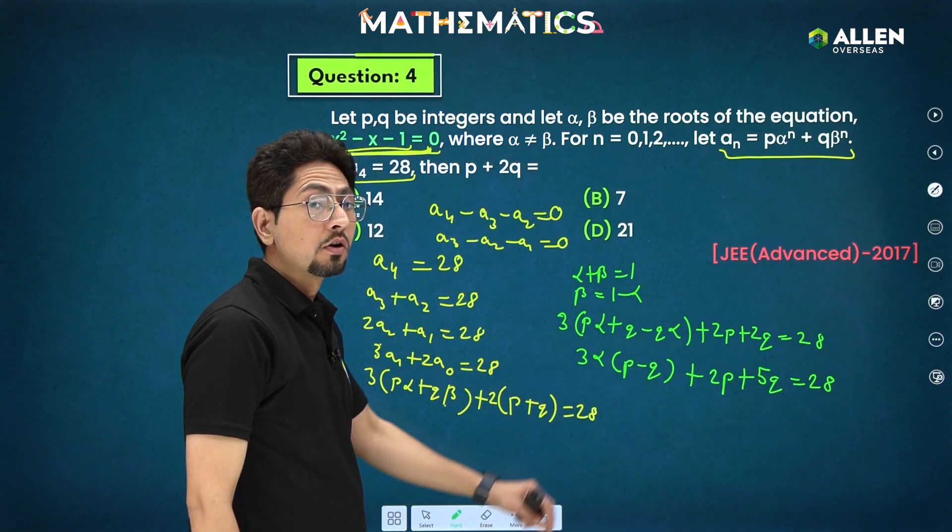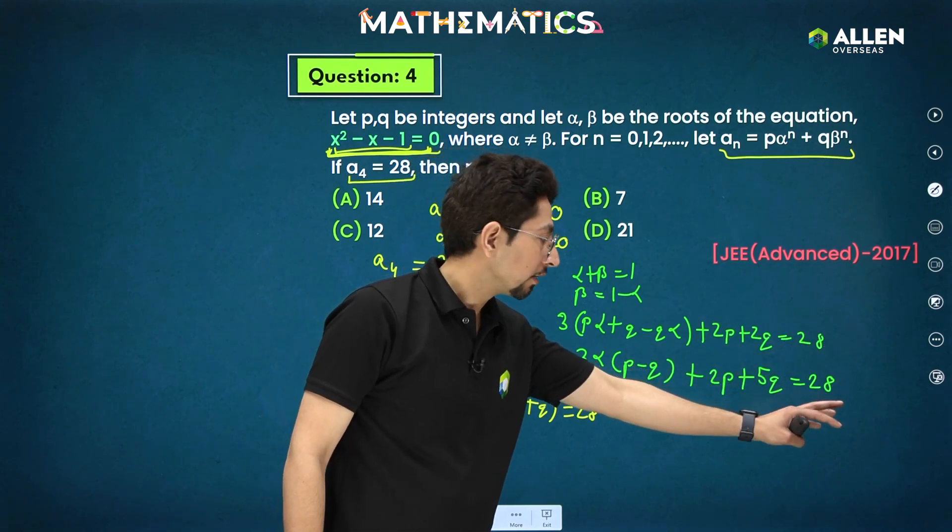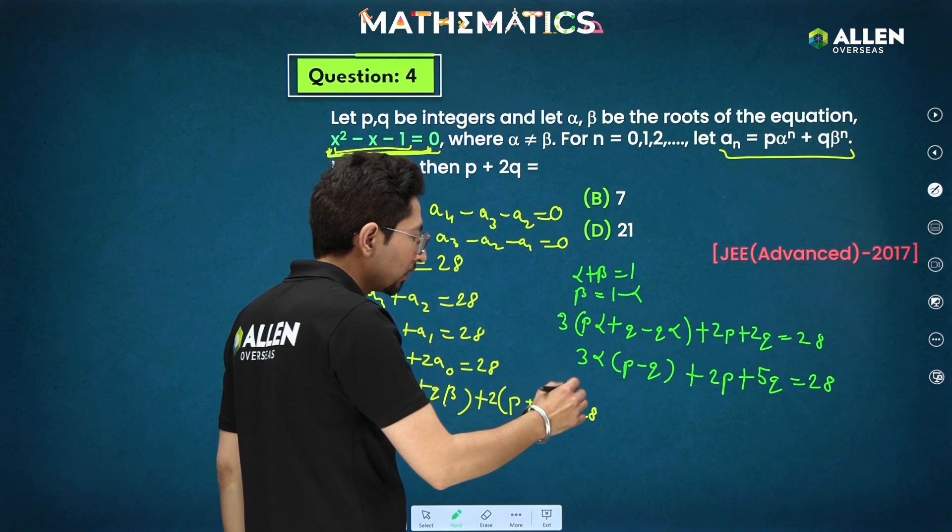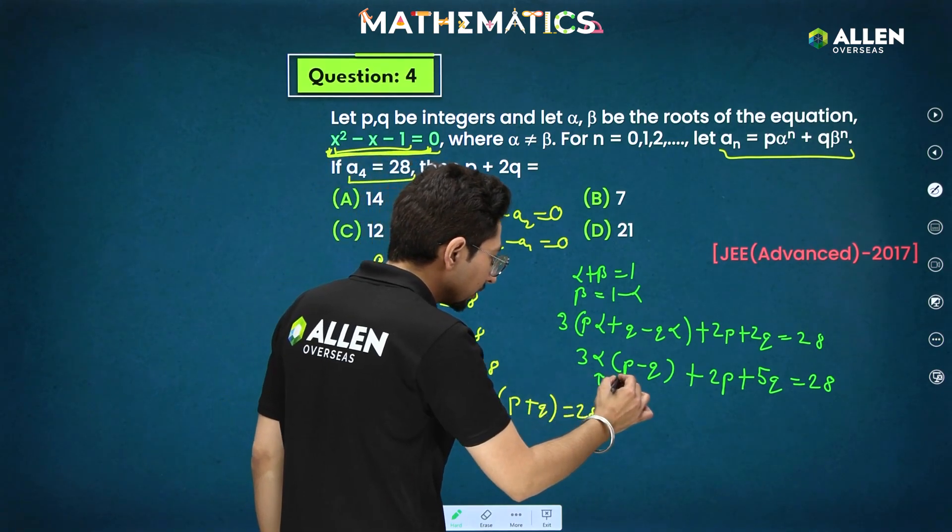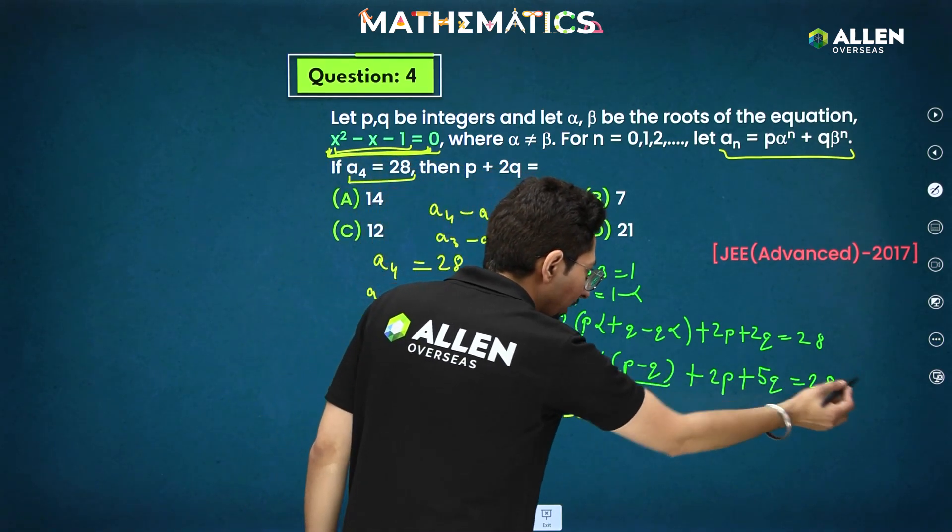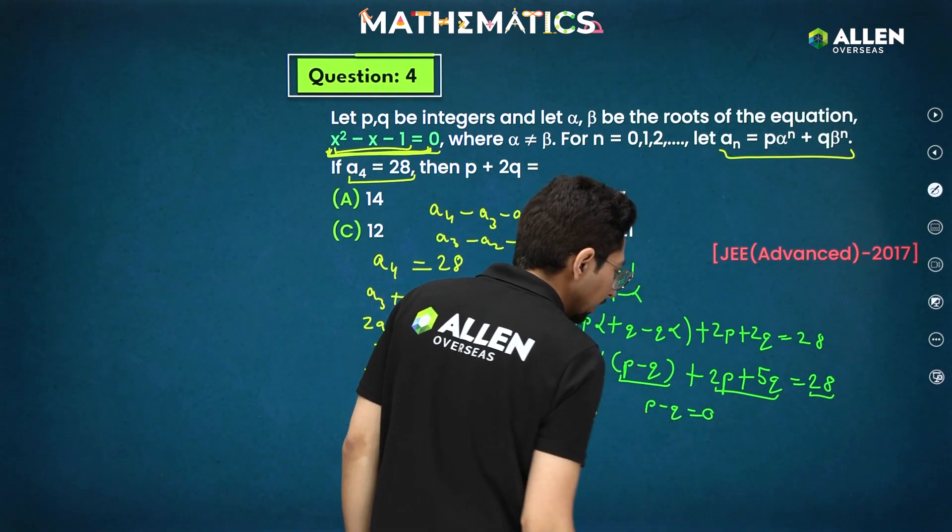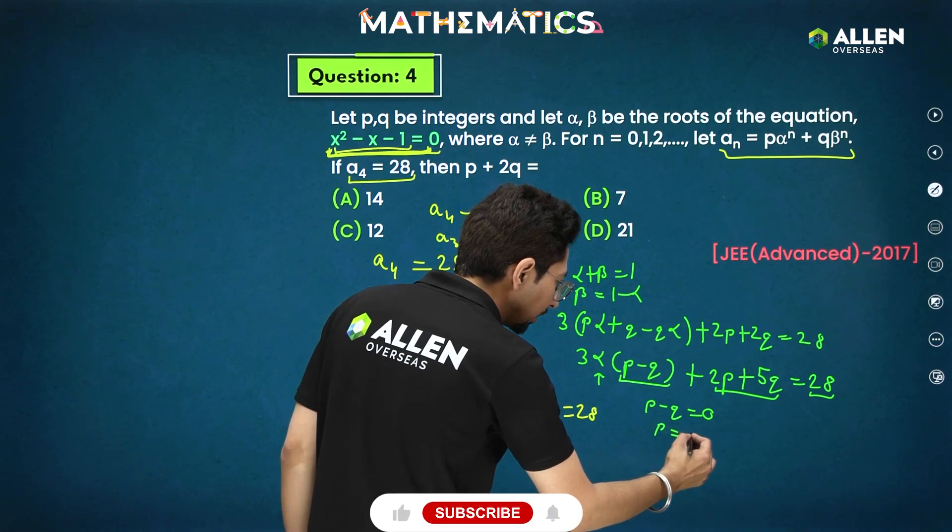So clearly on the right hand side we have only and only rational number, no irrational number. So directly on comparison what you can do? This is irrational. This part will be 0 only. No irrational part on the right hand side. And this part will be directly equal to 28. So this means p equals q only.